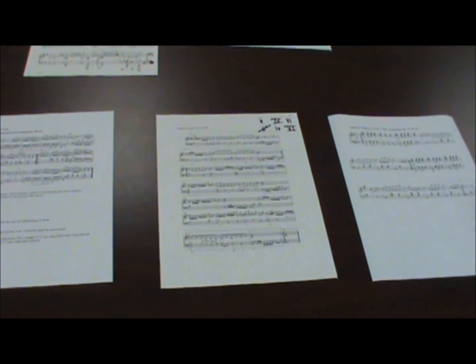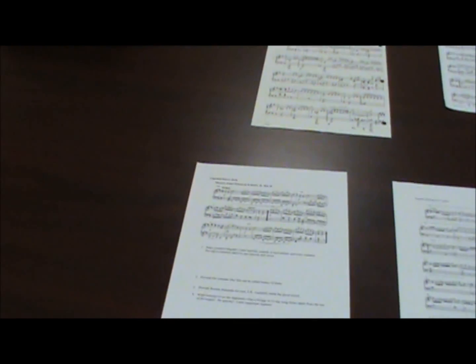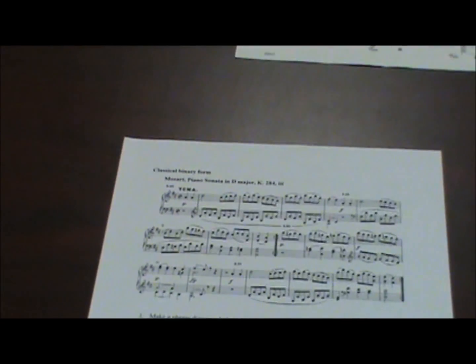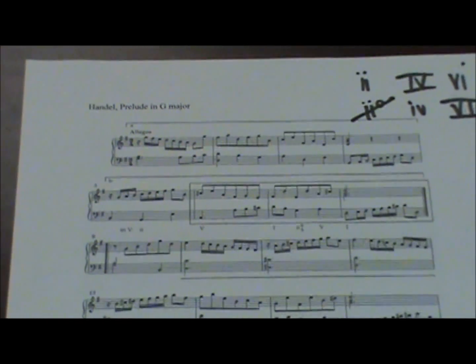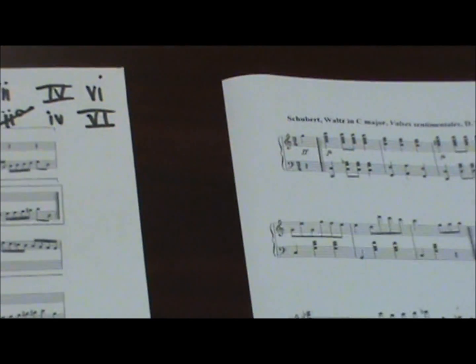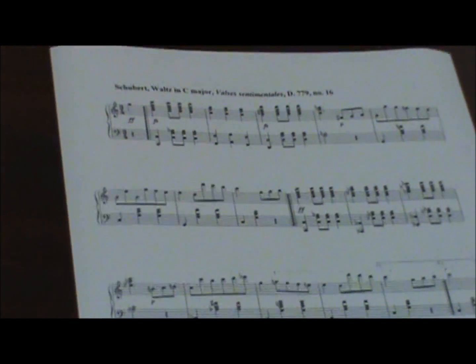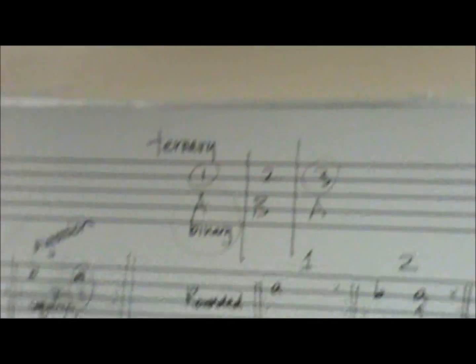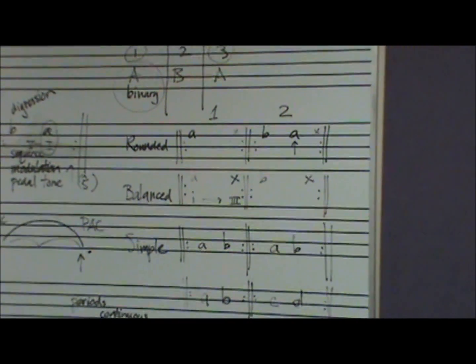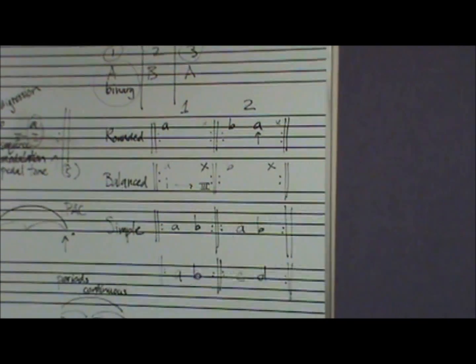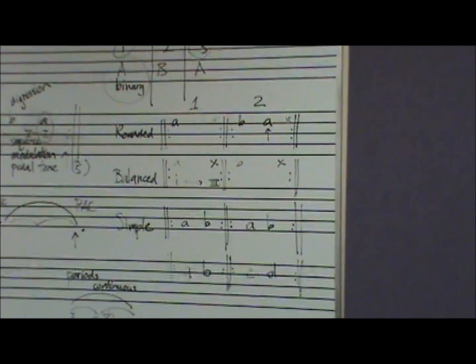All right. So three examples, each illustrating one of the main kinds of contrast and return or the lack of it. And I hope in each case that you didn't just pick up the terminology but got a sense of how you get form. How do you get contrast? How do you get return? And what kind of patterns do they typically fall into?